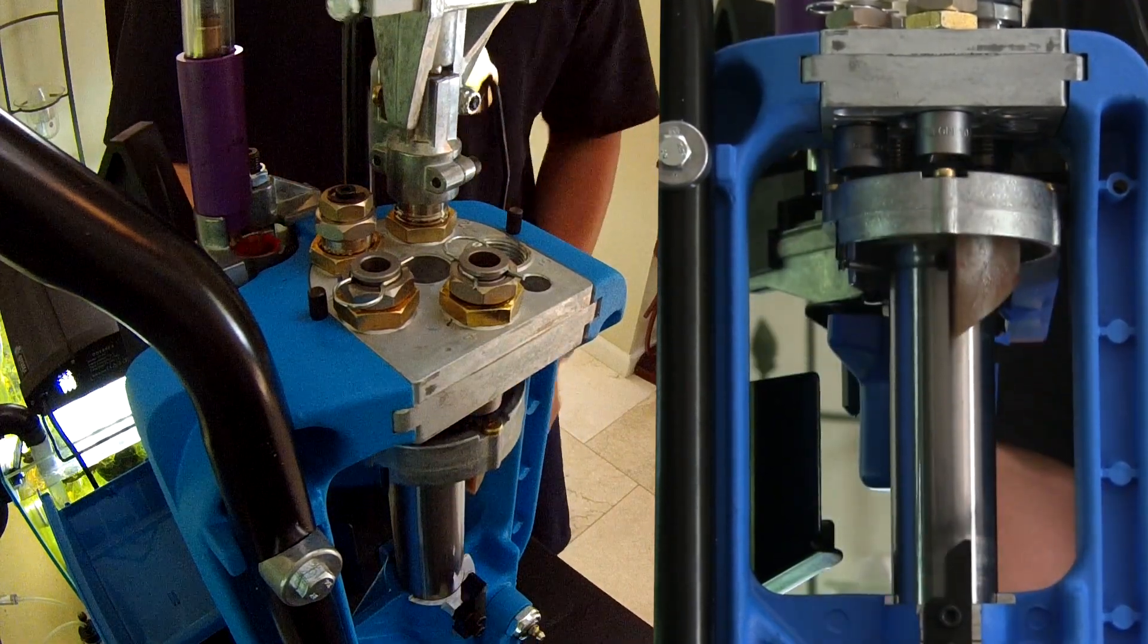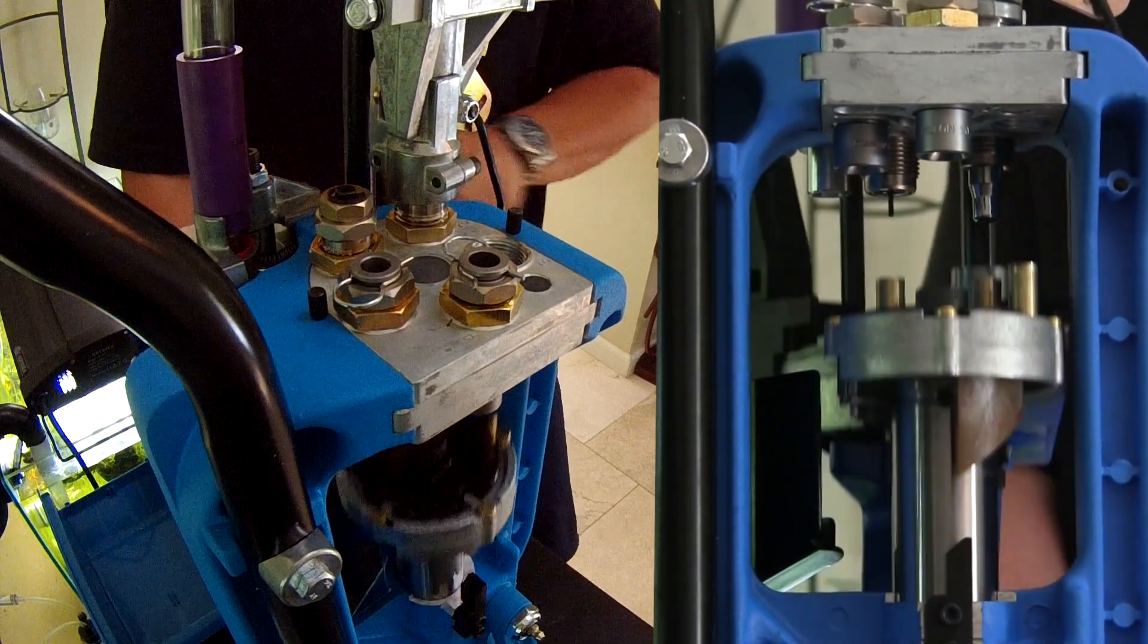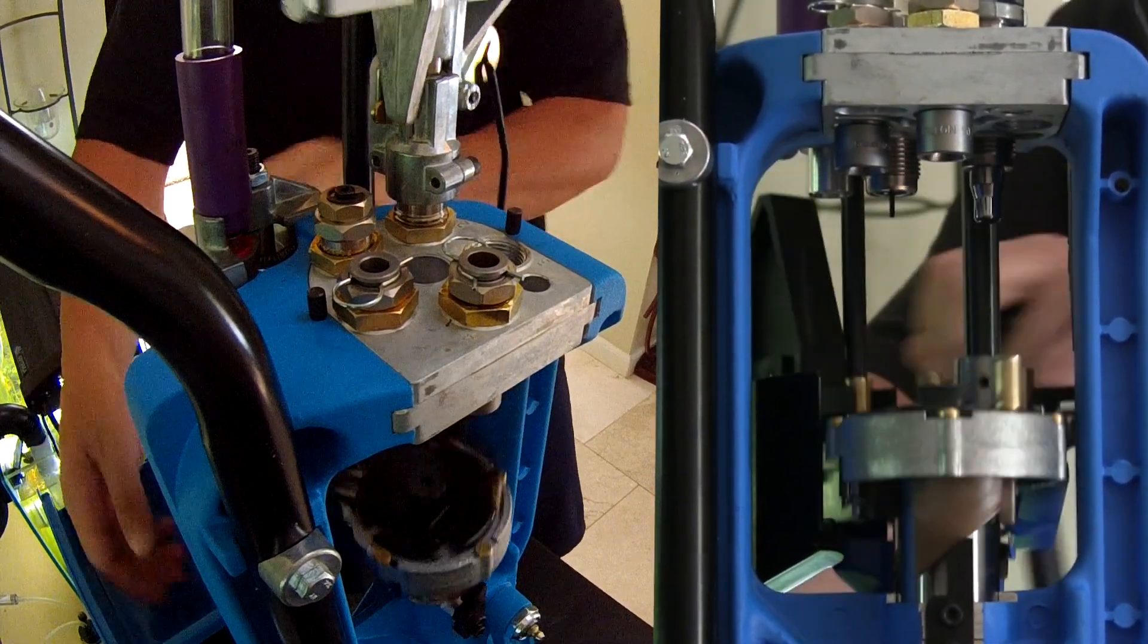Using .40 caliber once fired brass, we've repeatedly flared and resized the brass. Six shell casings were annealed using the method previously shown, six were not annealed.